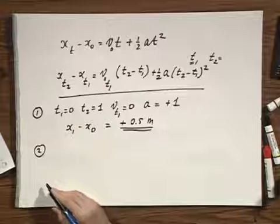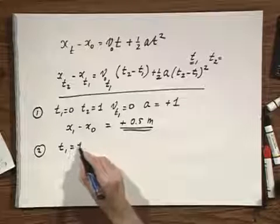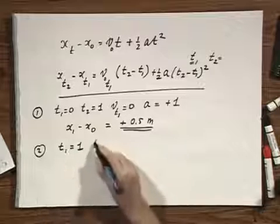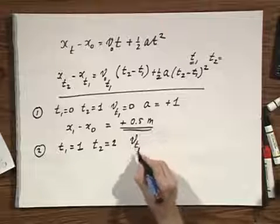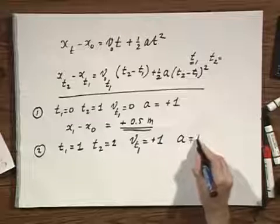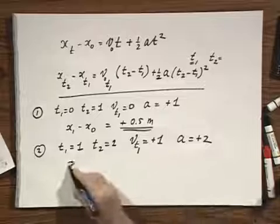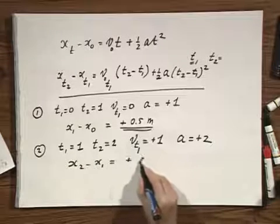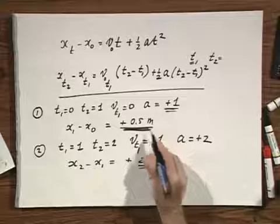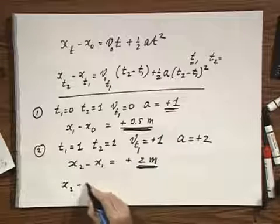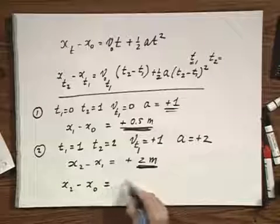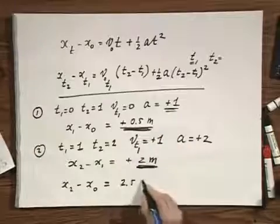For the second second, t_1 equals 1 — you start over after second number 2 — and t_2 equals 2. The velocity at the starting time is now plus 1, as you can see from the graph, and the acceleration equals plus 2. You calculate x_2 minus x_1 and find plus 2 meters. So in the first second it moves half a meter, in the second second it moves 2 meters, and x_2 minus x_0 is 2.5 meters.